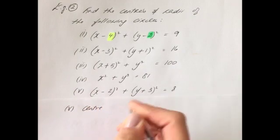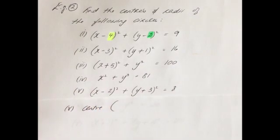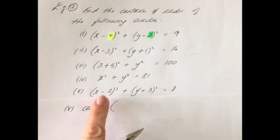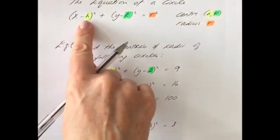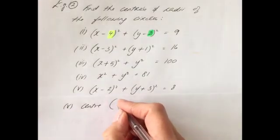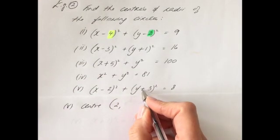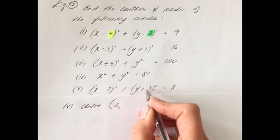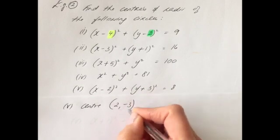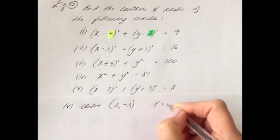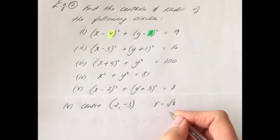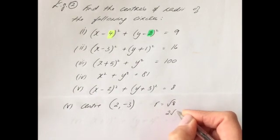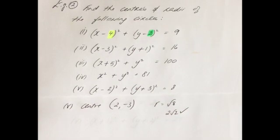For (x − 2)² + (y + 3)² = 8: there's a minus 2, so the x-coordinate of the center is 2. There's a plus 3, meaning it was y minus (−3), so the y-coordinate is −3. The radius is the square root of 8. The square root of 8 doesn't simplify to a whole number, but on the calculator it simplifies to 2√2. That's as far as we can go.